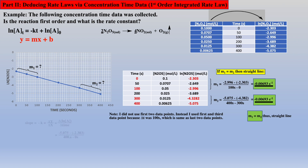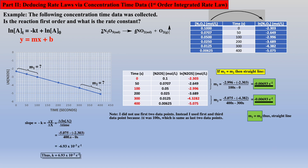Calculating the slope using the first and last data points affords the rate constant as shown. Note that the negative of the slope affords a positive rate constant.